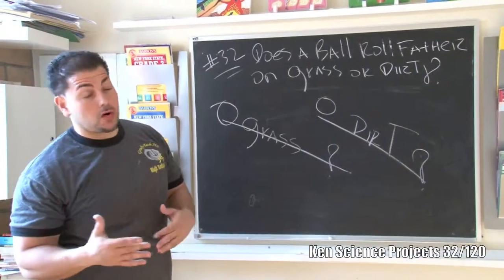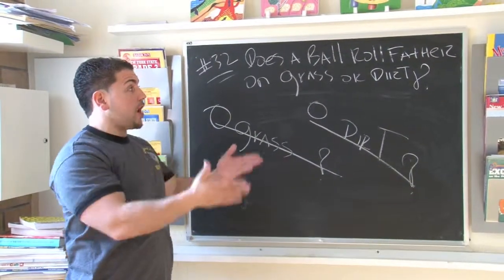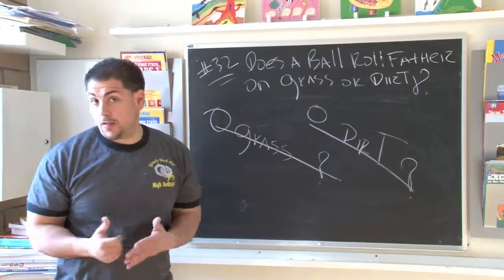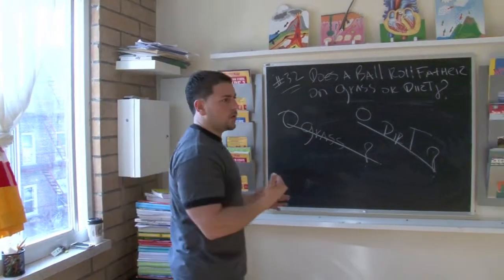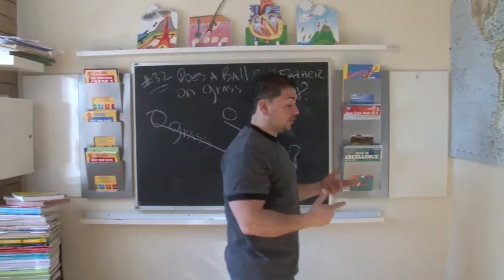All right, number 32 talks about a ball and whether or not it's going to roll farther on grass or dirt. Now, the best way to test this out is to just get yourself a regular ball. You can get like a blue ball or maybe a baseball or maybe a softball.